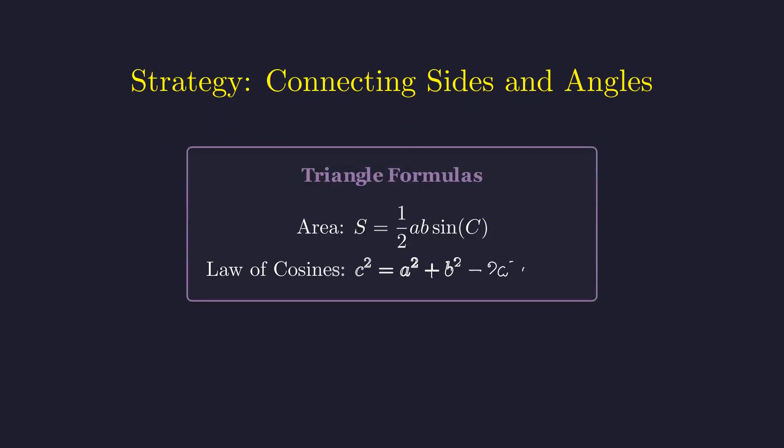Picture a triangle where sides A and B meet at angle C. We have two powerful tools here: the area formula involving sine of C and the law of cosines, which elegantly connects the opposite side C to this same angle.